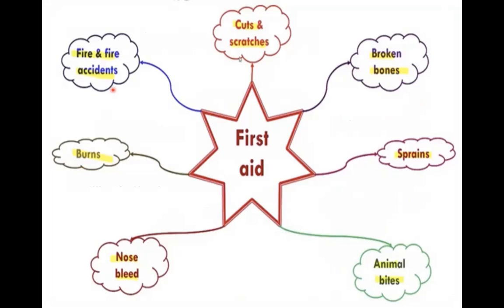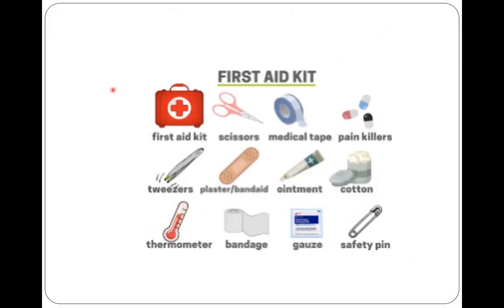First, let us look at what items are present in the first aid box. The first aid box contains scissors, medical tape, some painkiller tablets, cotton, and antiseptic ointment. Antiseptic is a substance that prevents the growth of germs. You will also have band-aid, tweezers, thermometer, bandage, gauze, and safety pins. These are the essential items that should be present in the basic first aid box.